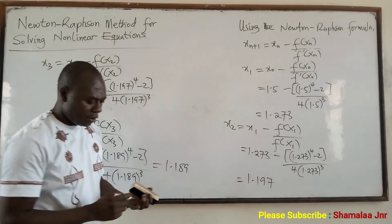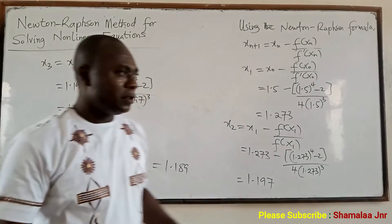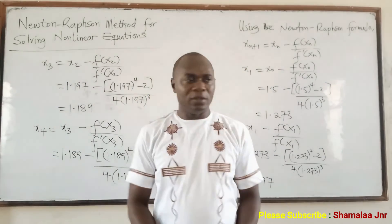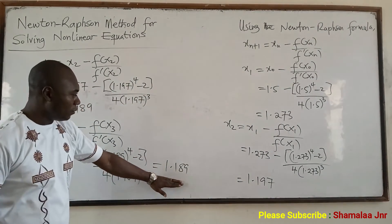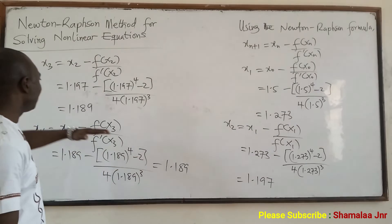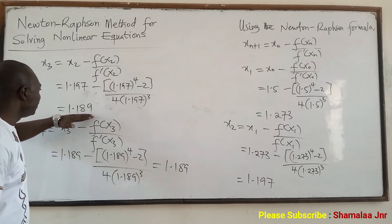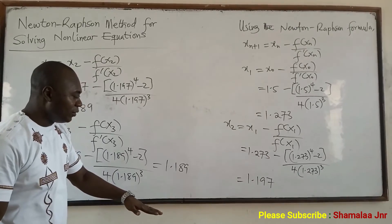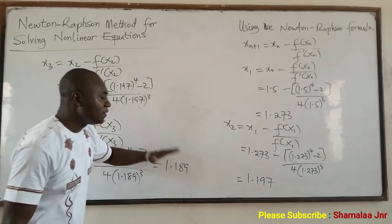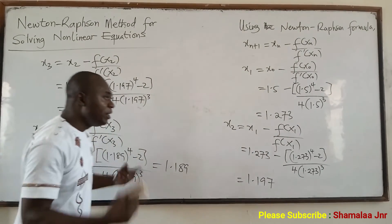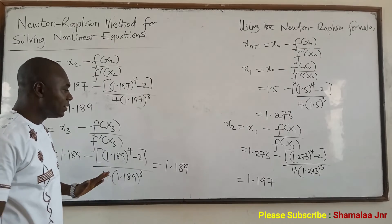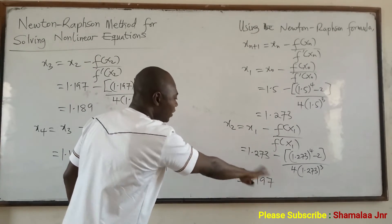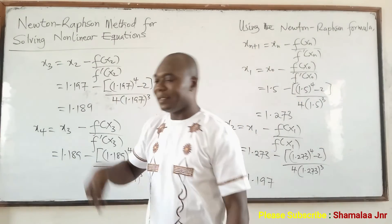Now, look on the board — when do you stop? You don't have to continue indefinitely. The question asked us to carry the answer to 3 decimal places. So when you see that X4 is 1.189 and X3 is also 1.189 — when an answer repeats itself to the required decimal places, then it means you have to stop. It means the final solution has been obtained. So you stop when you see that an answer has repeated itself, and this 1.189 is the answer.